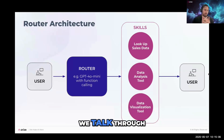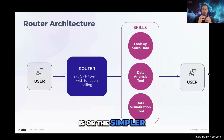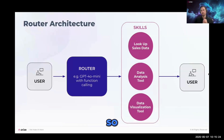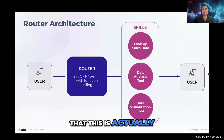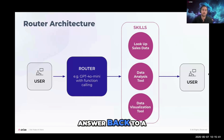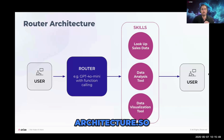You might need to add cycles. Also keep in mind: the simpler the architecture, the more consistent it will be. The more LLM calls you introduce, the more variability you get, making consistent outputs harder. This router architecture is actually used in a production agent at Arize — a copilot in our dashboard that routes to a skill, completes it, and returns an answer — and it's been very successful because of its simplicity.